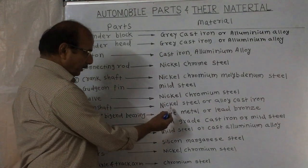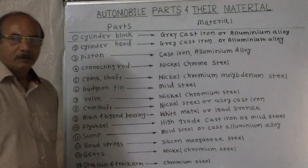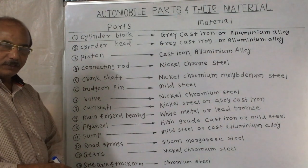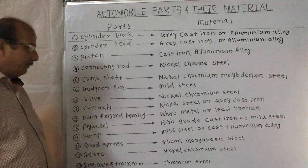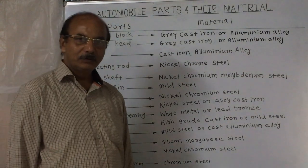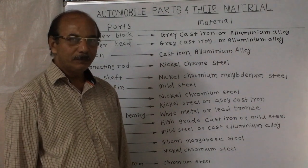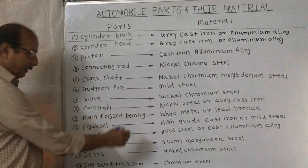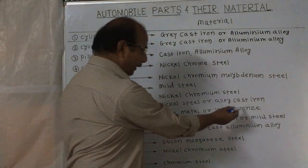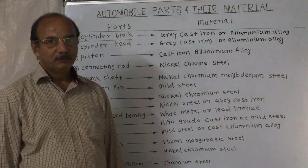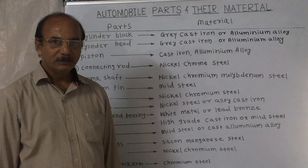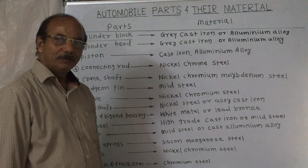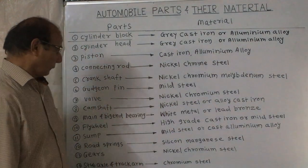The material of the camshaft is nickel-steel or alloy cast iron. The camshaft and crankshaft are joined or meshed together with gears. The camshaft also operates the distributor and the eccentric feed pump. For main and big-end bearings, the material is white metal or lead bronze. These plain bearings, also called frictional bearings, are made from white metal or red bronze.